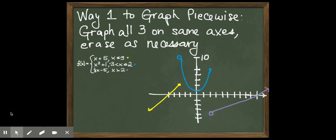And then finally, we have the line that is the last piece. As you can see, I've erased all of the line except the part to the right of 2. And again, it's an open circle because it's greater than 2, not greater than or equal to 2. So that point will not be included. So that's way 1, where you just take all 3, you graph them completely, and then you erase stuff that you don't want. That's more work, but it's also a little bit more straightforward.